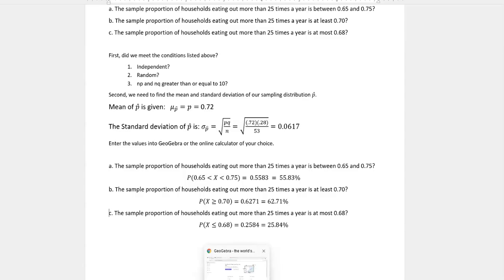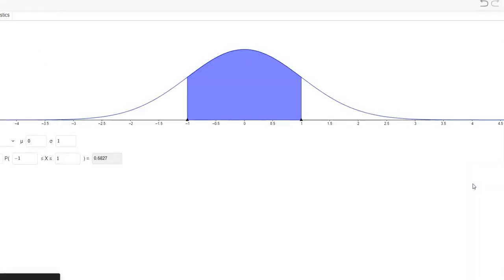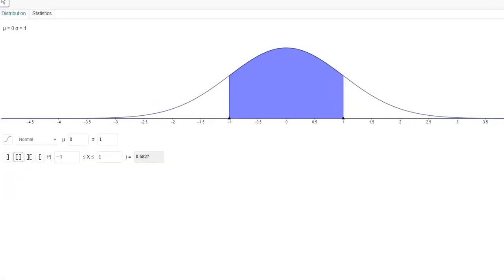I'm going to show you how to do that on GeoGebra. On GeoGebra.org, I would click on GeoGebra classic and then click on probability. Now I want to enter my mean that I was given. We just used the proportion as given, which was 0.72. I want to enter that standard deviation that I found by the square root of pq over n, and that was 0.0617.